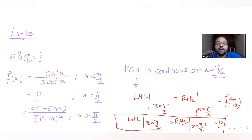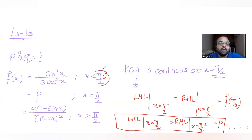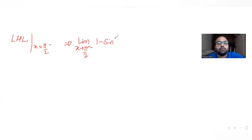So our aim is to find the left-hand limit and right-hand limit at x = π/2. For the left-hand limit as x → π/2⁻, we use the function valid for x < π/2, which is (1 - sin³x) / (3cos²x).